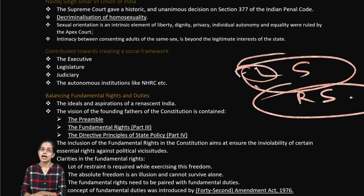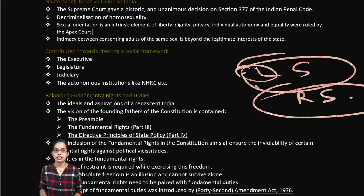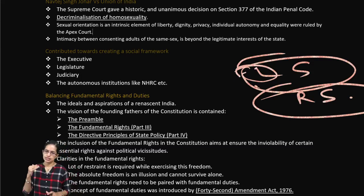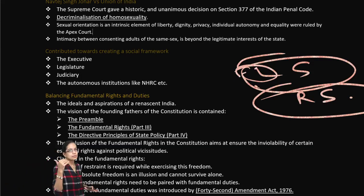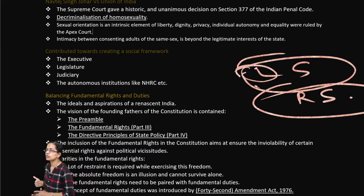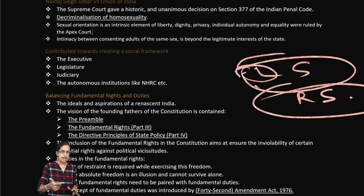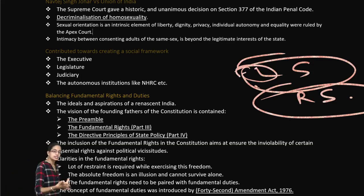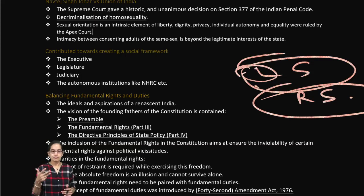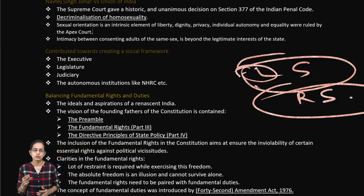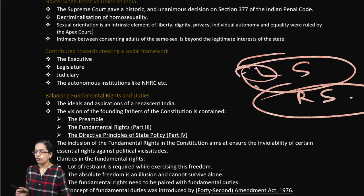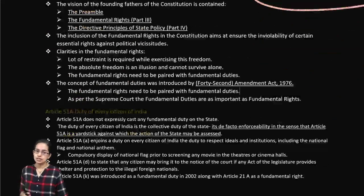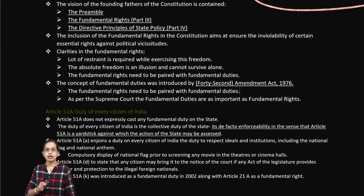When our constitution was laid down, important aspects included the preamble, which was later amended to add the words 'socialist' and 'secular.' We also have fundamental rights (Articles 12 to 35), including the right to constitutional remedies. Fundamental duties — what a citizen must abide by — and the Directive Principles of State Policy are also key components. The concept of fundamental duties was introduced under the 42nd Amendment in 1976.